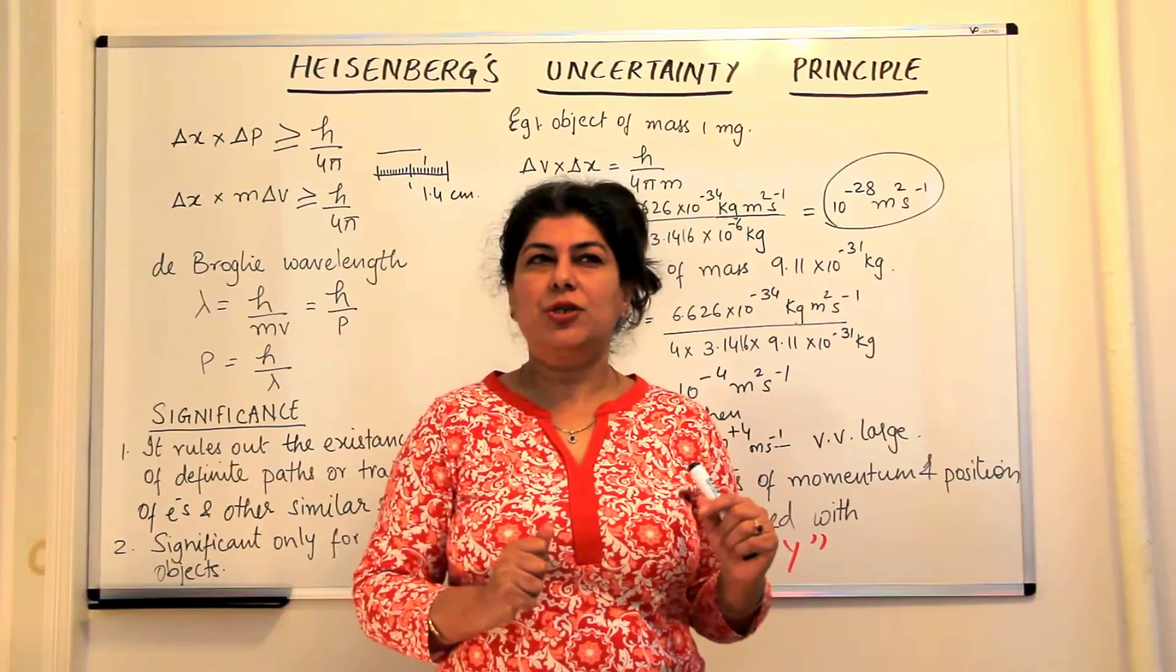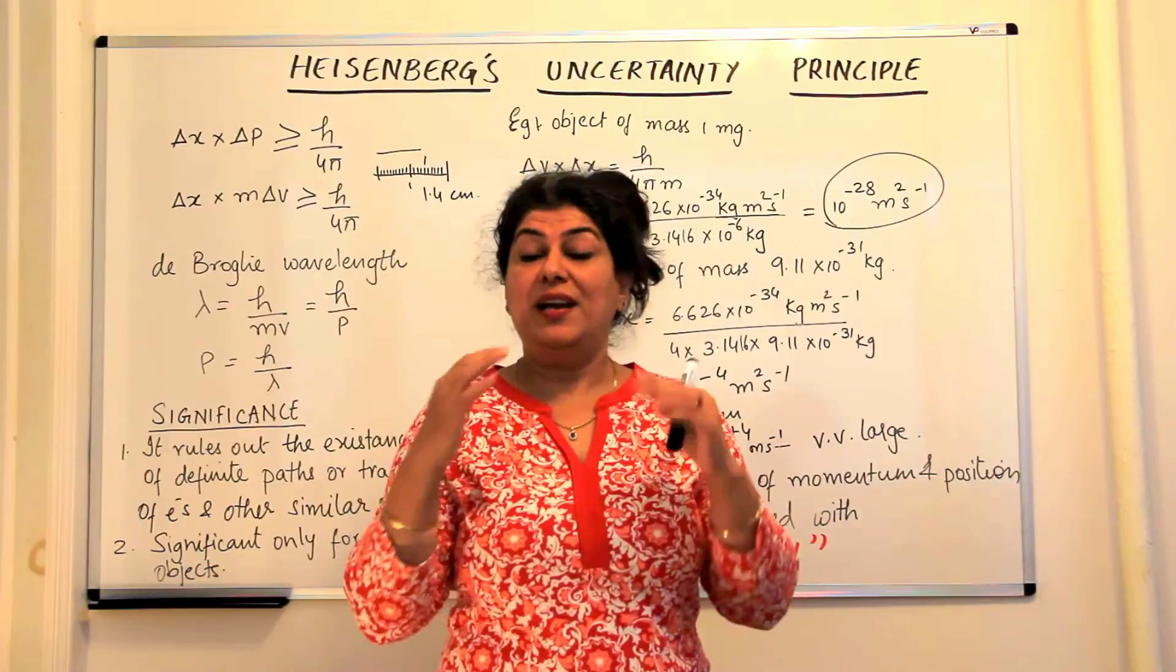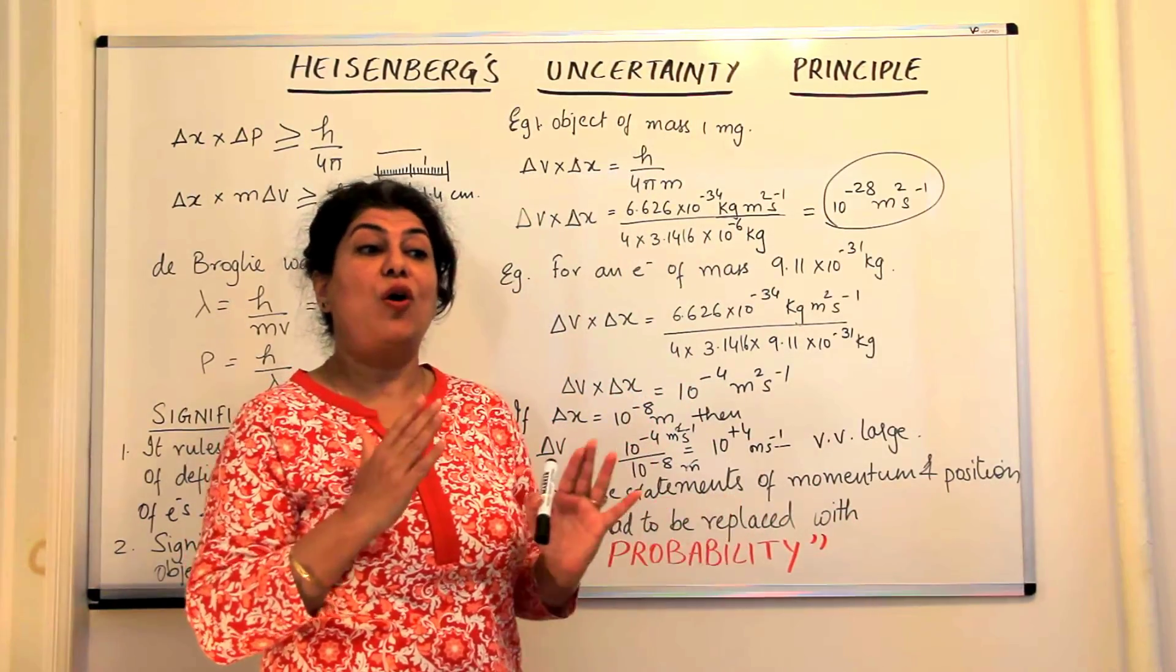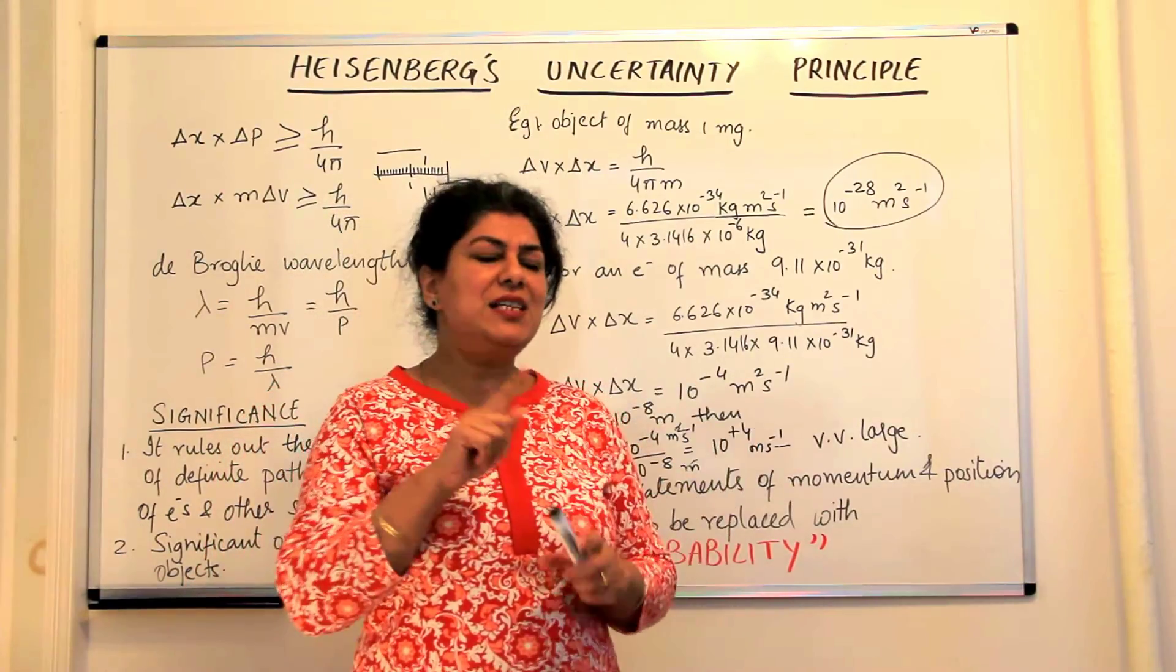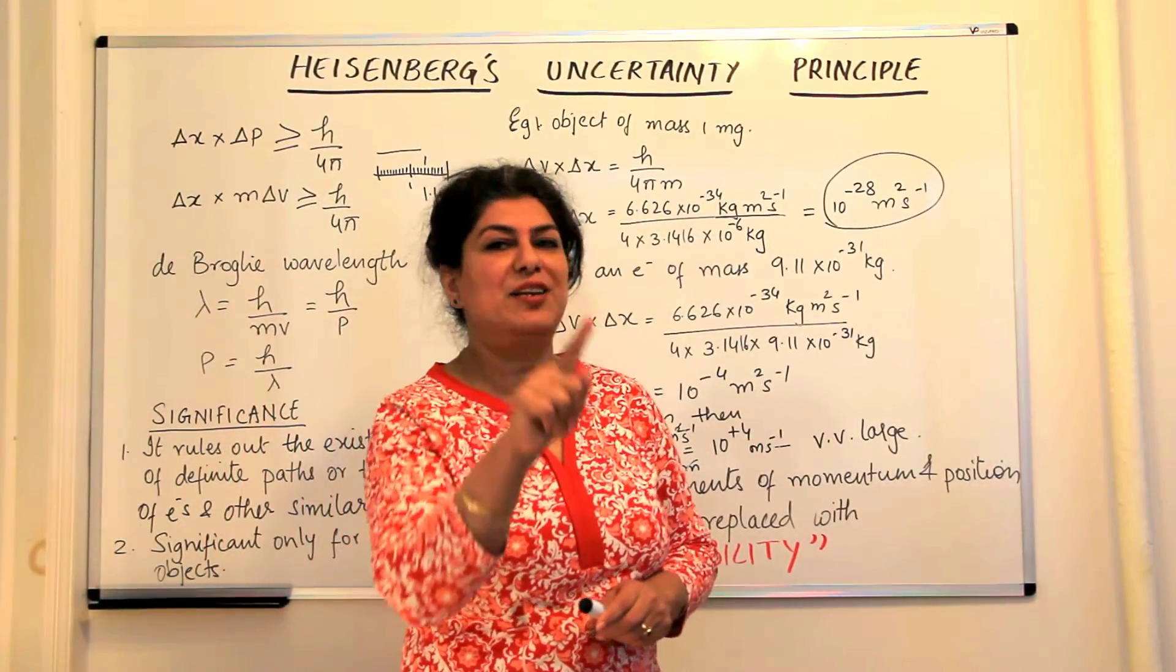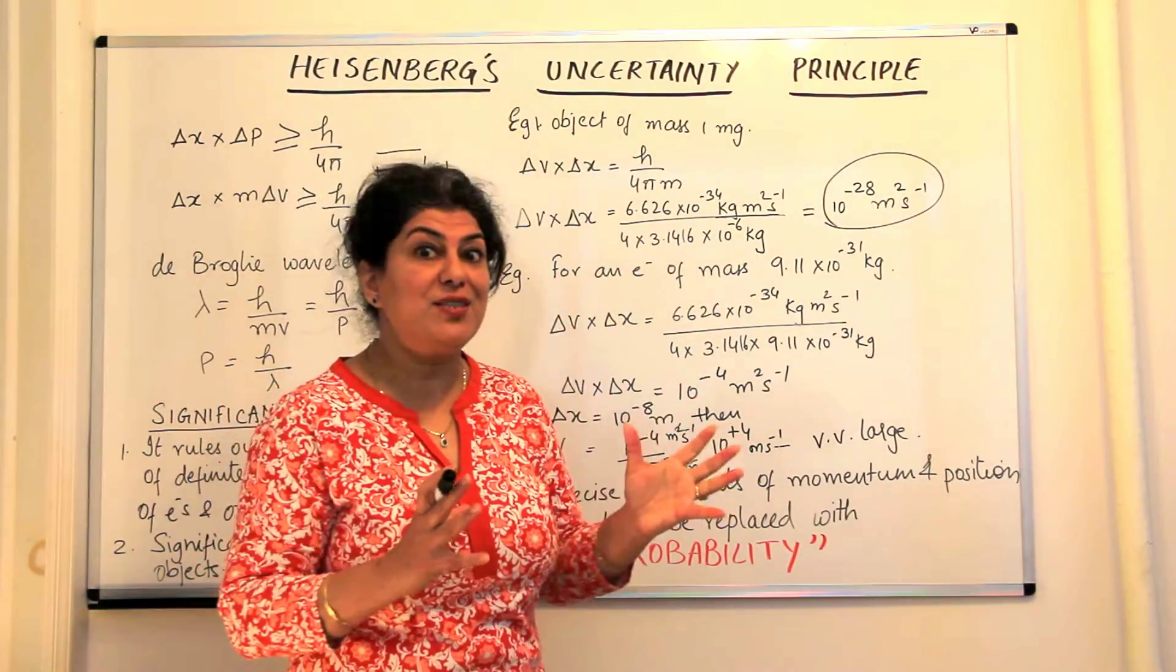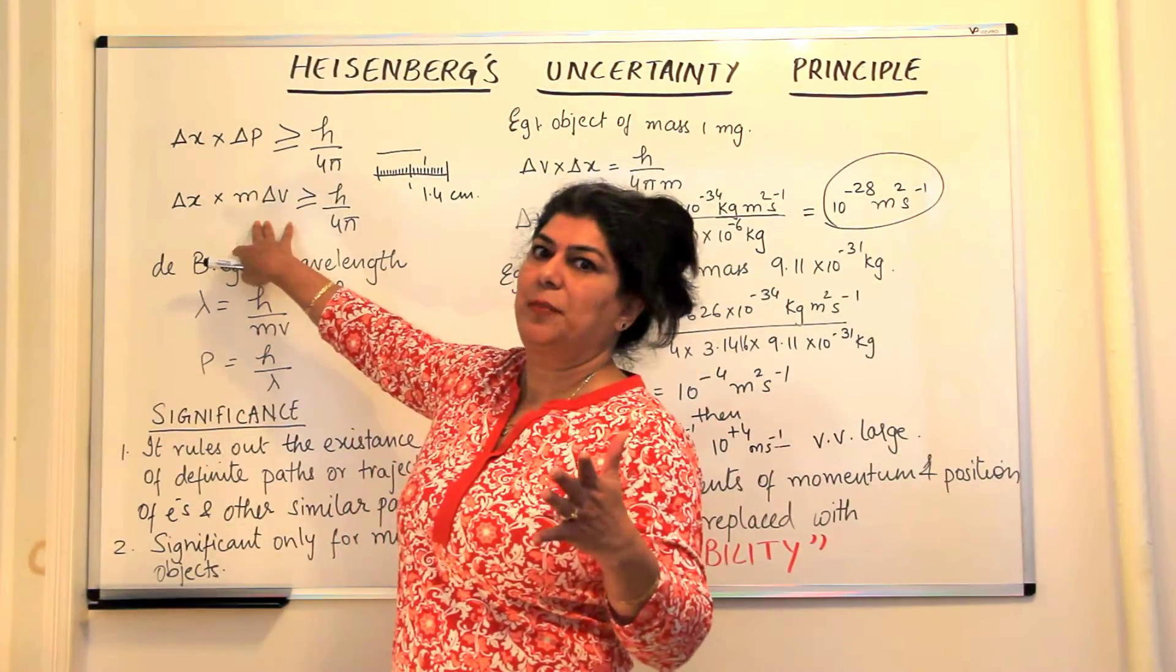It was not possible to talk about 'this is the electron and this is the path in which it is moving.' We now started talking of electrons in terms of probability—probably the electron is present, because there is an error of h upon 4 pi always. We cannot say it is certainly here or this is certainly the path.